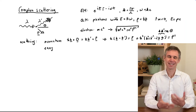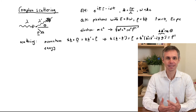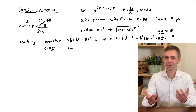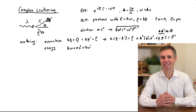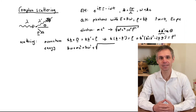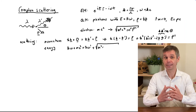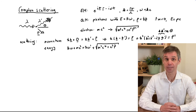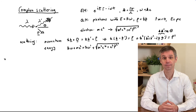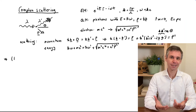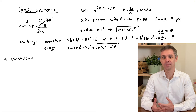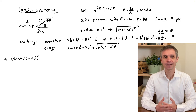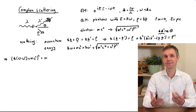In the scattering process, energy is also conserved. This means that the sum of the energies of the two particles before the process is the same as the sum of the energies after the process, where we are using the relativistic version of the energy expressions. We rearrange this relation by isolating the square root on one side and all the other terms on the other side, and then take the square of these expressions.